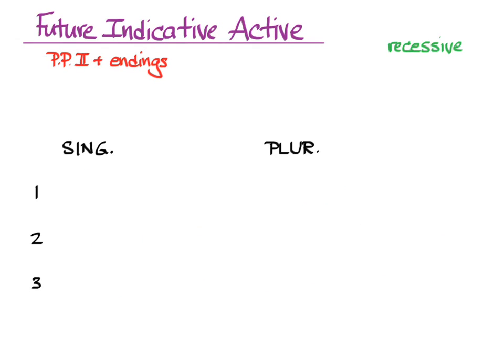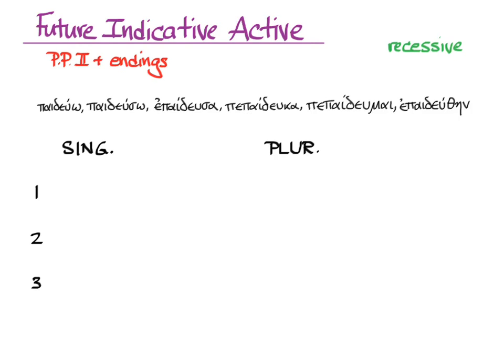Let's try it with another verb. Here's paideuo and its six principal parts: paideuo, paideuso, epideusa, pepidelca, pepidelmai, epidelthane. We go to the second principal part and take off the omega to get our stem, paideus. Then we add the ending o and the recessive accent. O is long, so it can only go back to the second to last: paideuso, I will educate.